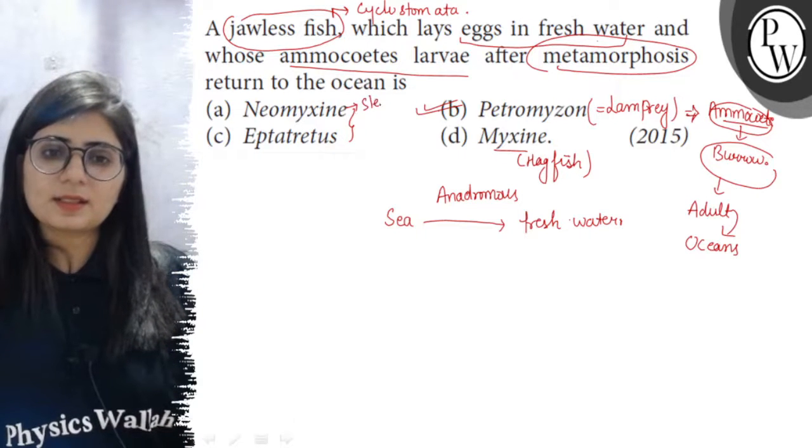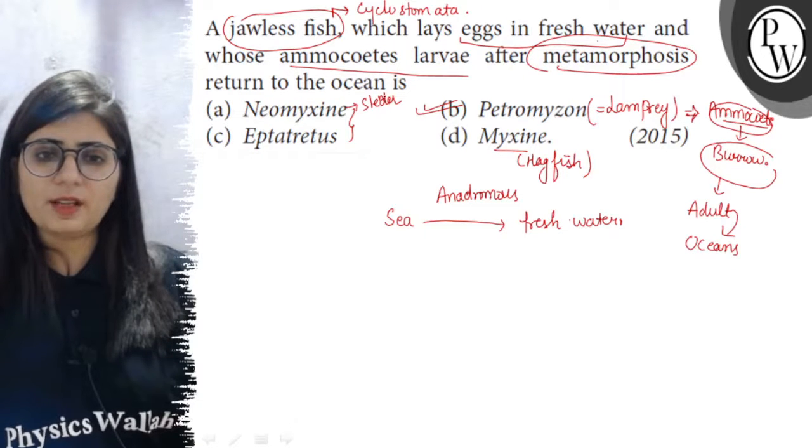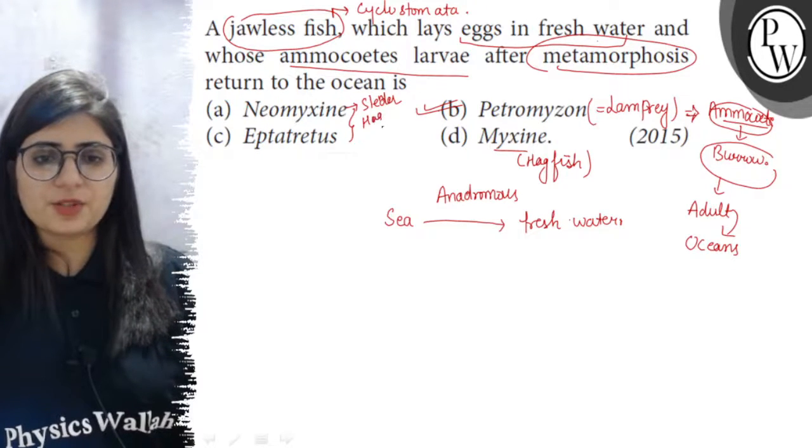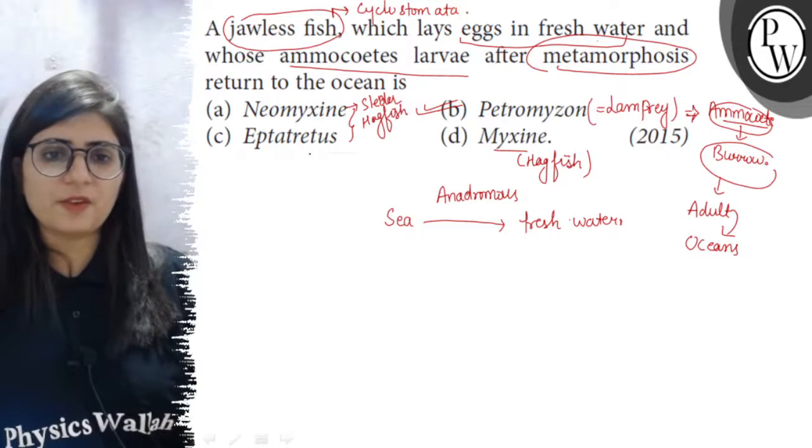Neomyxin is a genus, it means a very fine Hagfish. So, it is also a genus of Hagfish.